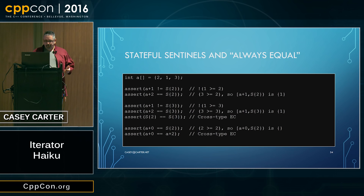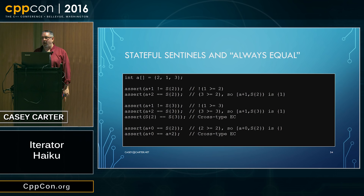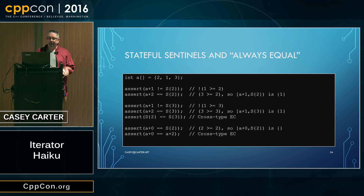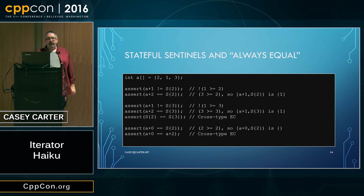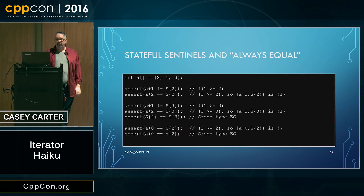And that is consistent so far. However, A+0 is also equal to S{2} because A+0 has value 2, and 2 ≥ 2, so the range A+0 and S{2} is an empty range. But since A+0 equals S{2} and A+2 equals S{2}, transitivity tells us A+0 equals A+2. These two different pointers into the same array must be equal, even though they point at different things and have different addresses. This is obviously a contradiction — and it fundamentally arises with stateful sentinels because cross-type equality comparability requires transitivity across types.